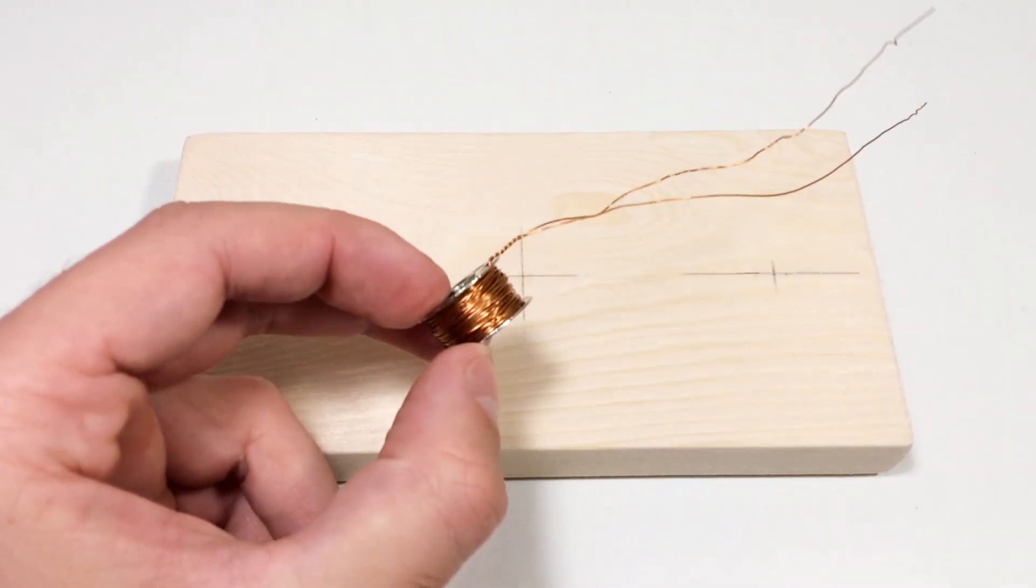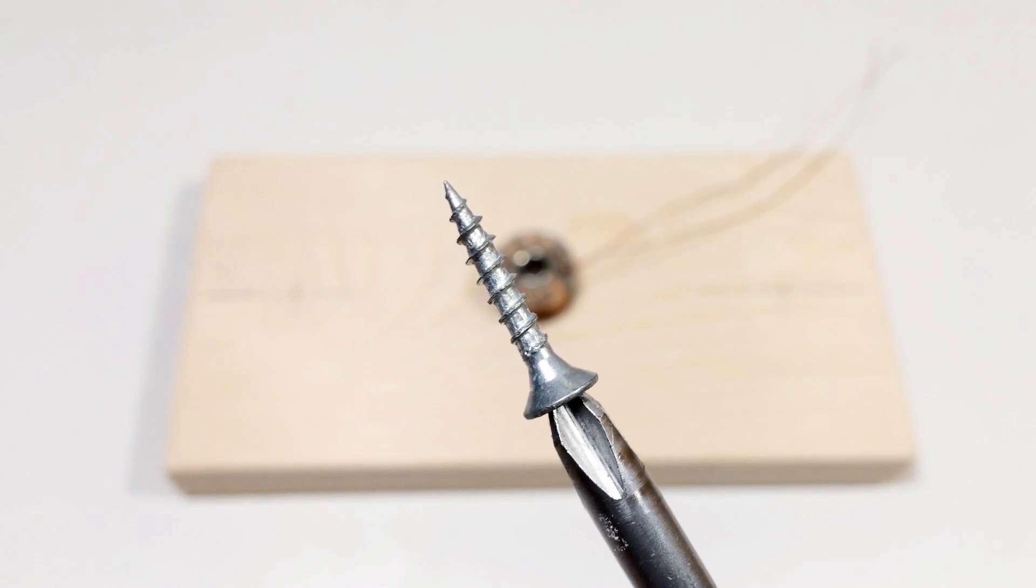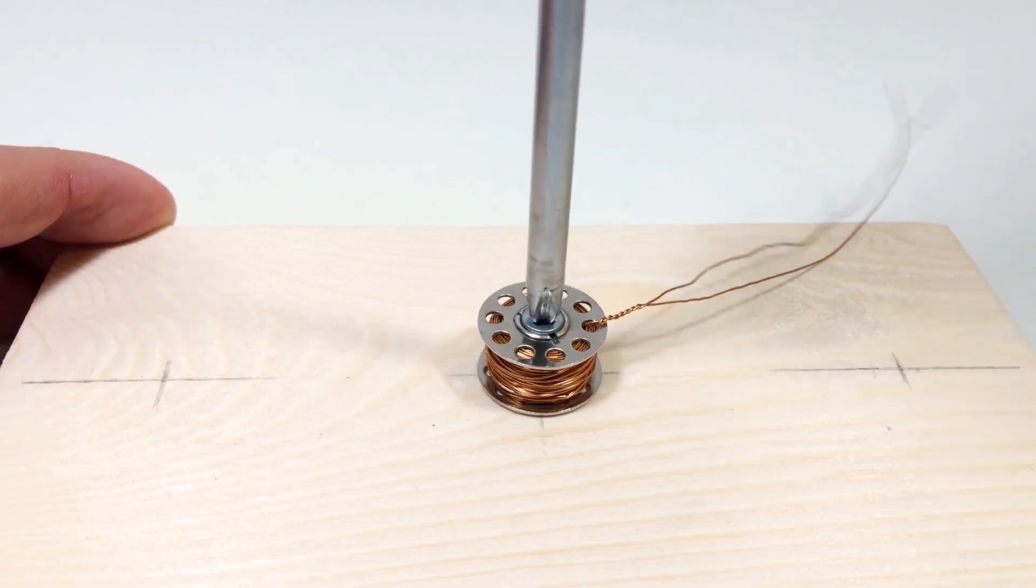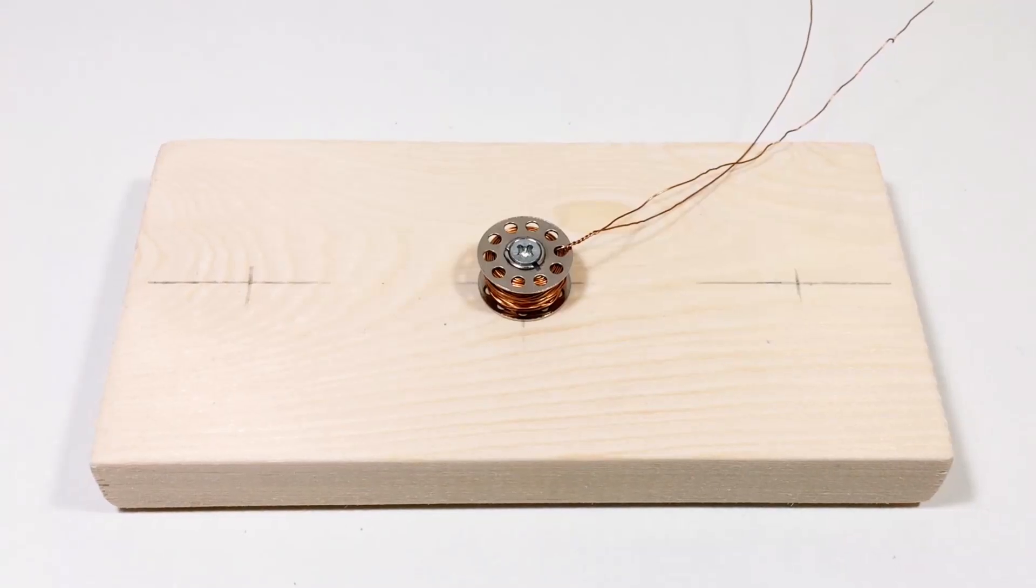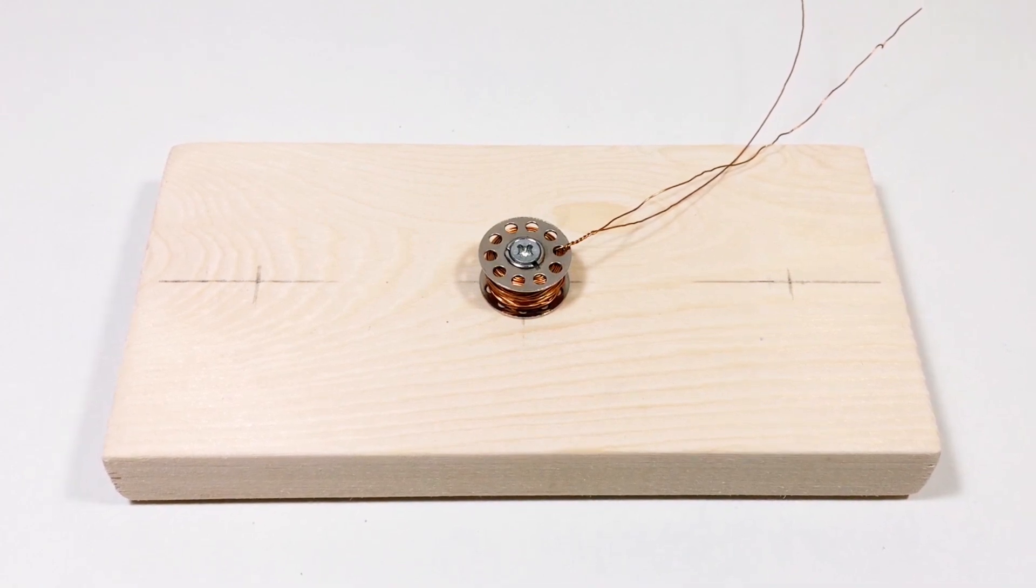Mount the coil securely onto a wooden base. Drive a screw through the center of the spool so that the screw acts as a core. This will boost the magnetic field strength, just like an iron core in a real electromagnet.